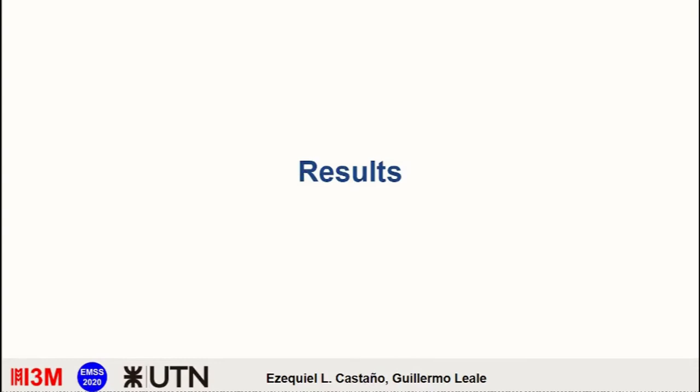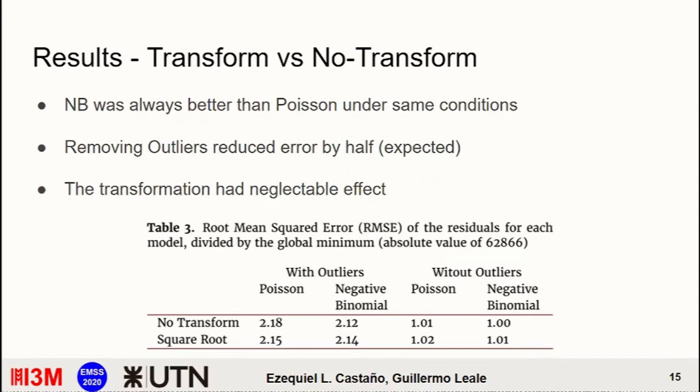For the results, we use the root mean square error to check which model was best. But the focus should not lie on the number itself, because we are not, as I said, looking for a particular measure of error, but rather to interpret the model parameters and the model itself. In this case, we can clearly see that the negative binomial was better than the Poisson under the same conditions. Removing the outliers reduced the error by half, although that's expected. And the transformations we applied actually were neglectable. The negative binomial with no transformation performed the best among all eight possibilities. So now I'm going to show you some of the distributions, the posterior distributions or the parameter distributions for this best performing model.